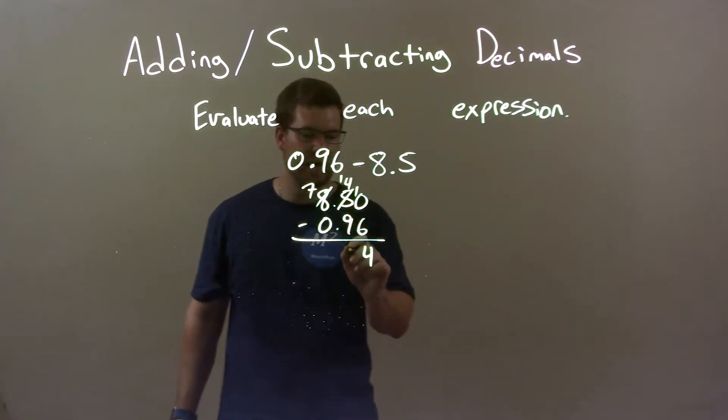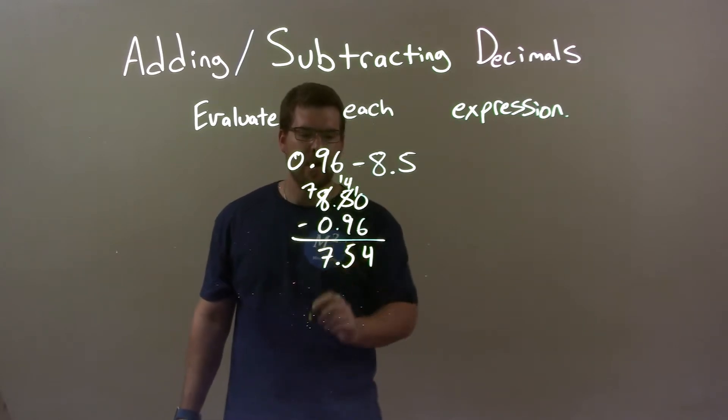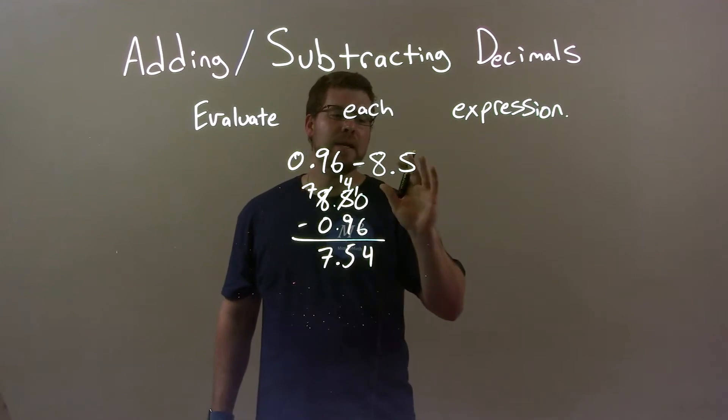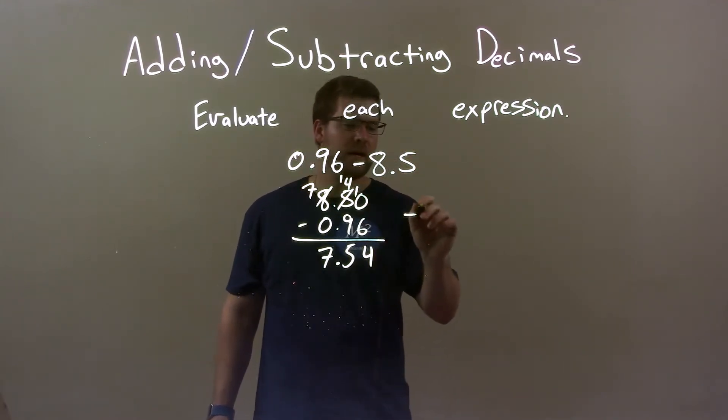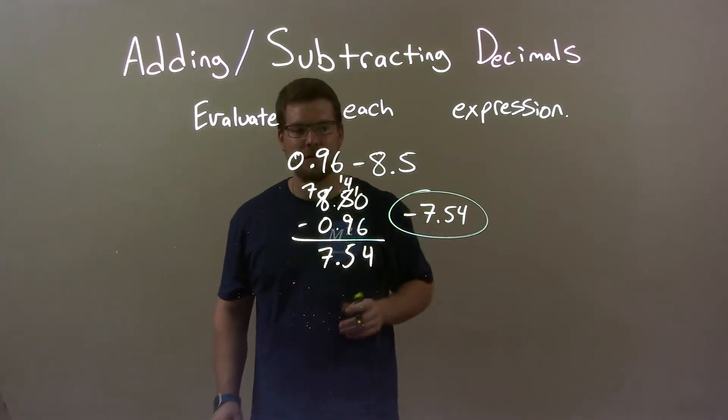14 minus 9 is 5. Bring the decimal point down. 7 minus 0 is 7. We have 7.54, but we need to make sure it stays negative, so put a negative there: negative 7.54. There we have our final answer.